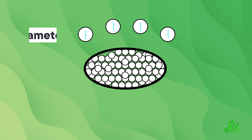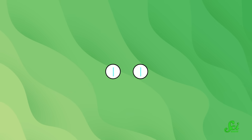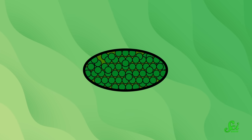It produces haploid gametes — the plant version of sperm and egg cells. If sporophytes are spore plants, this gamete plant is, appropriately again, the gametophyte. Sometimes scientists are good at naming things. Two gametes then find each other, fuse, and produce a new diploid organism — a new sporophyte. And the cycle begins again.